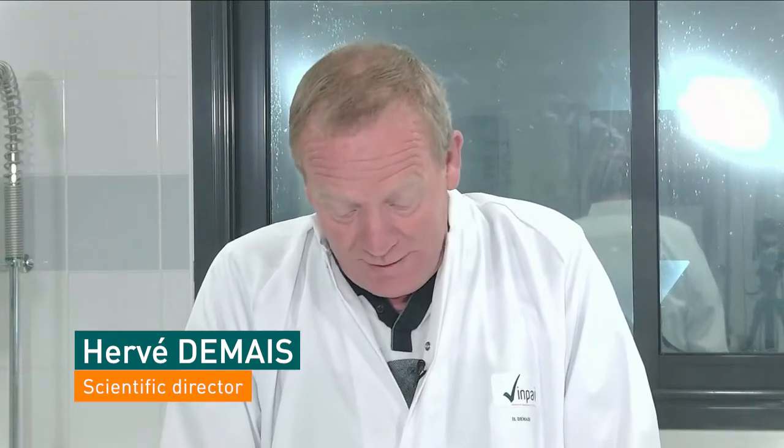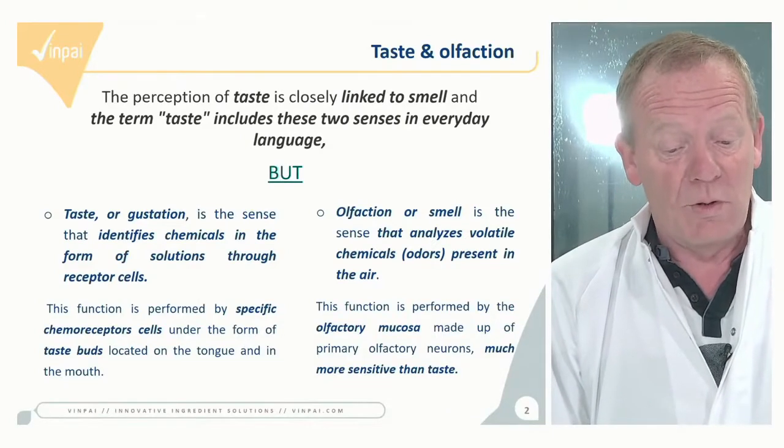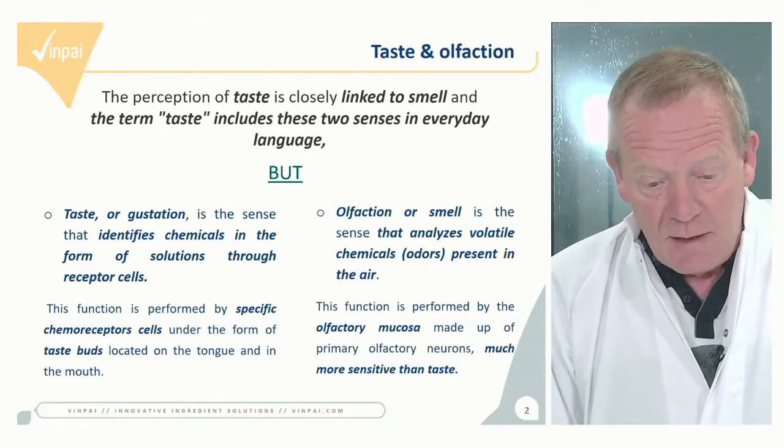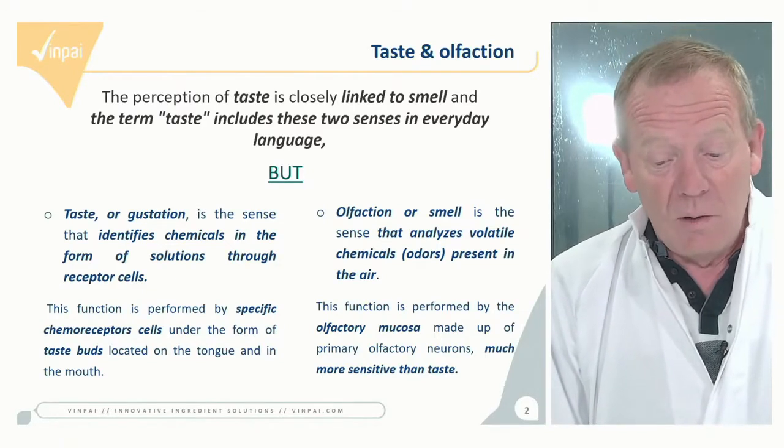Aromas are essential to the notion of food flavor and largely condition our food preferences. We will analyze how our body allows us to appreciate what we eat, thanks to our two main senses: taste and olfaction. The perception of taste is closely linked to smell, so the term 'taste' today includes those two senses in everyday language. Taste or gustation identifies chemicals in solution via receptor cells mostly in the mouth, while olfaction analyzes volatile chemicals or odors present in the air.